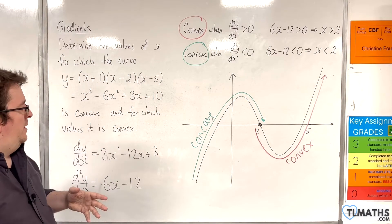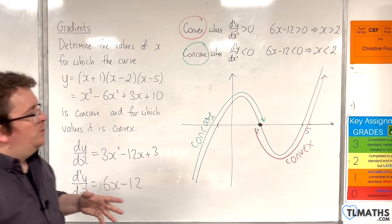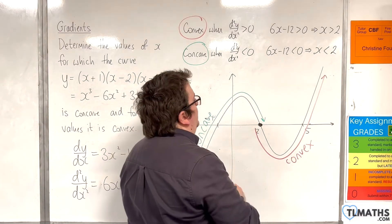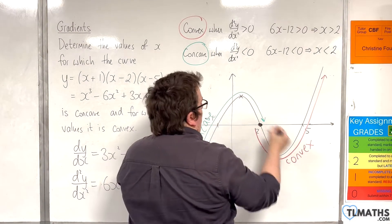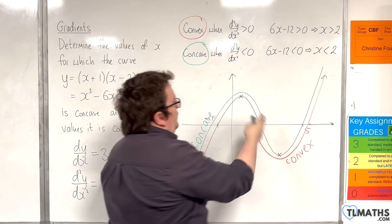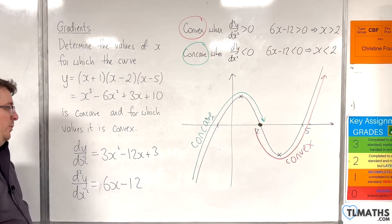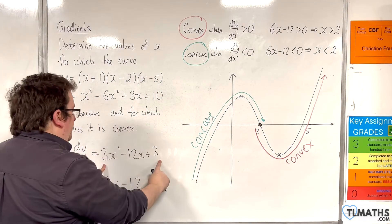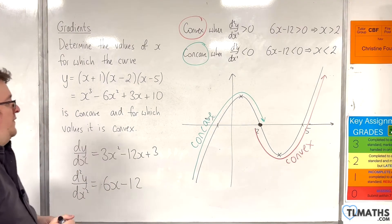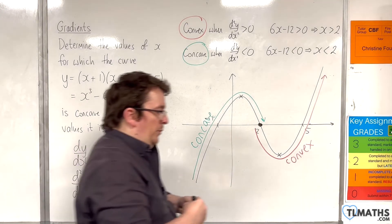So, a key example of that is, if you want to look at the stationary points, for example. So, if you looked at the stationary points. So, if you found when dy/dx was equal to 0. So, if you solved that, 3x² - 12x + 3 equals 0.